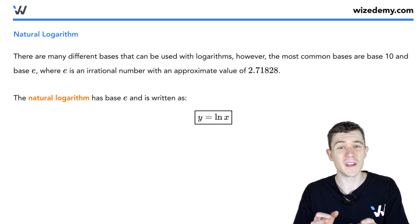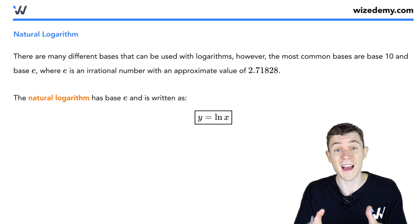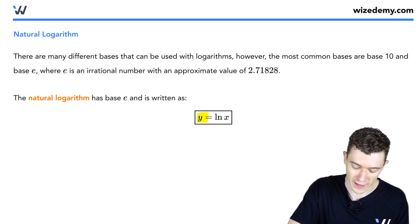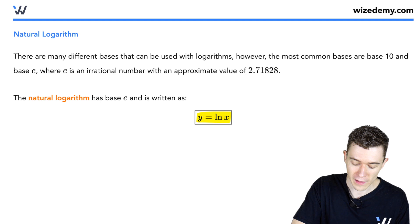Now there's a very special logarithm we'll look at, the natural logarithm. That's abbreviated LN. LN of X means the exact same thing as log base E of X.